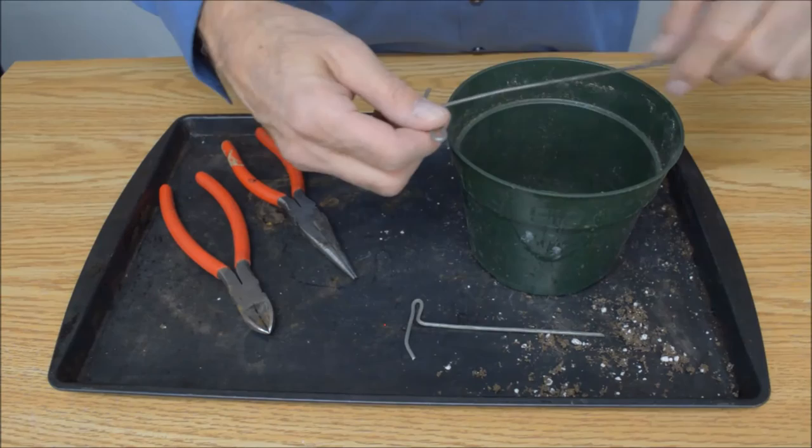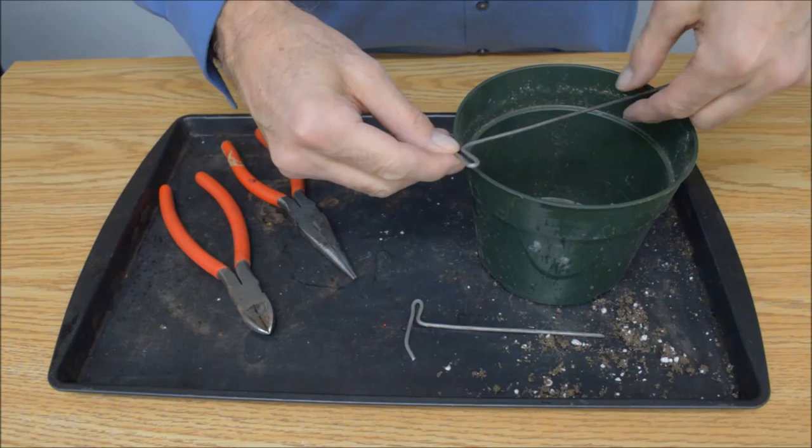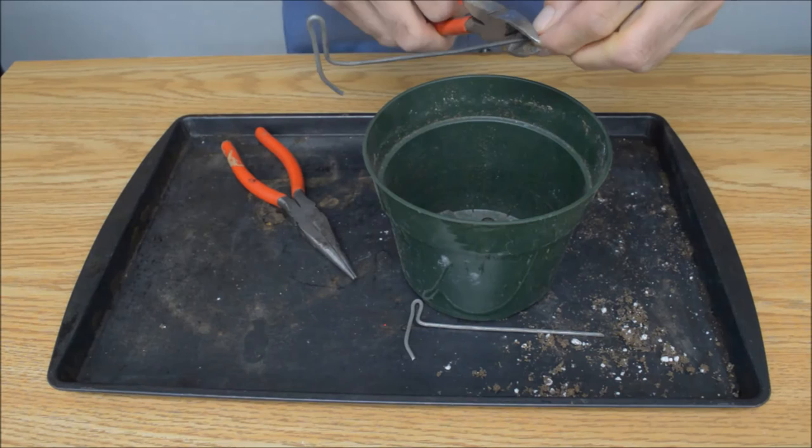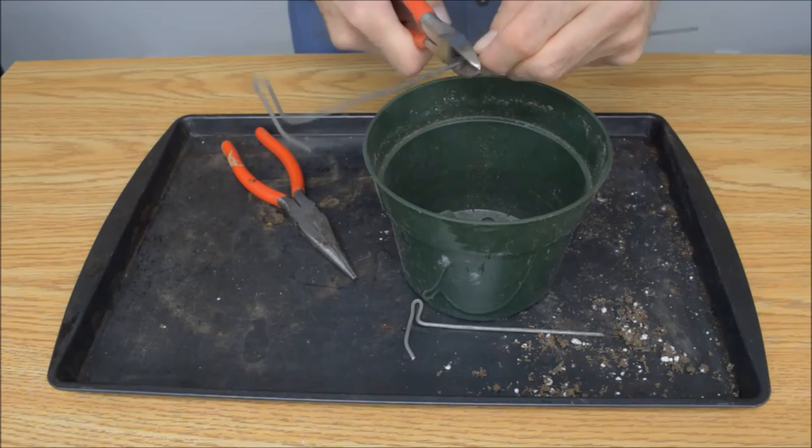The last step is to cut it to length. So the clip is going to be sitting here and we want the wire to go almost all the way across the pot. So I'll take a point here and cut it off.